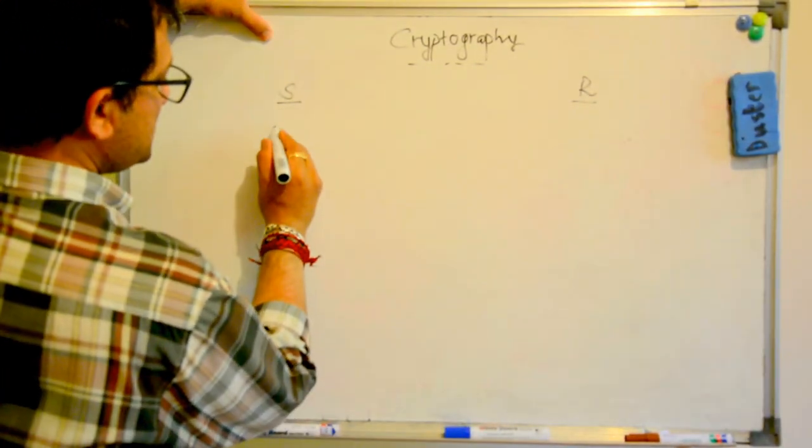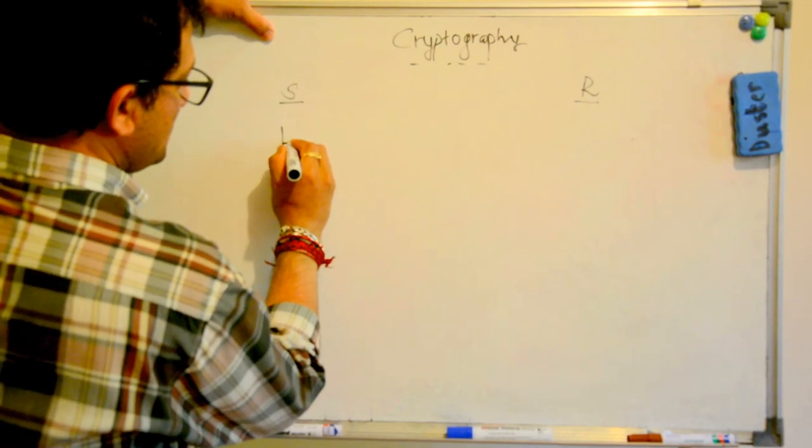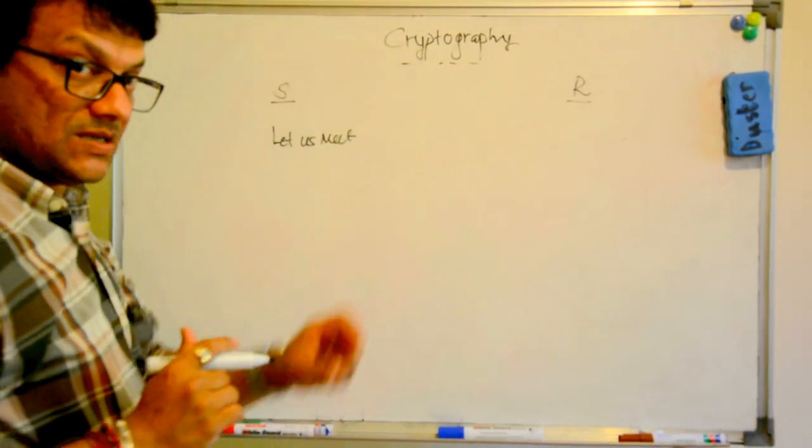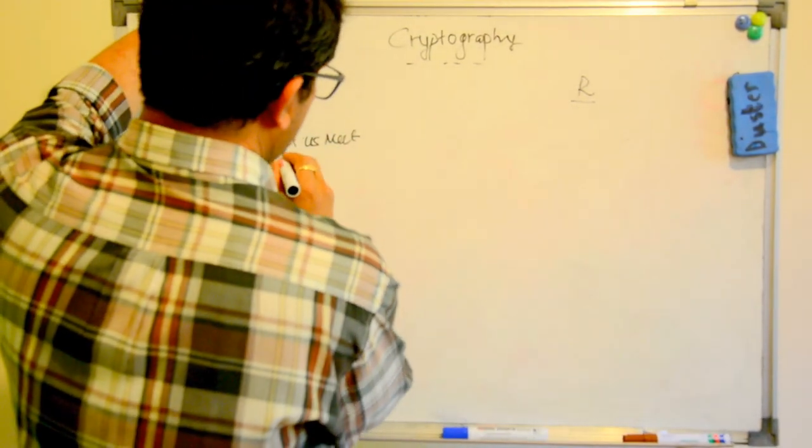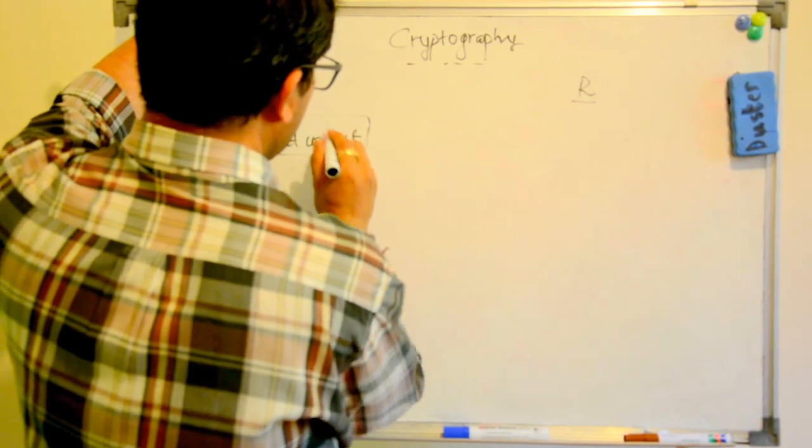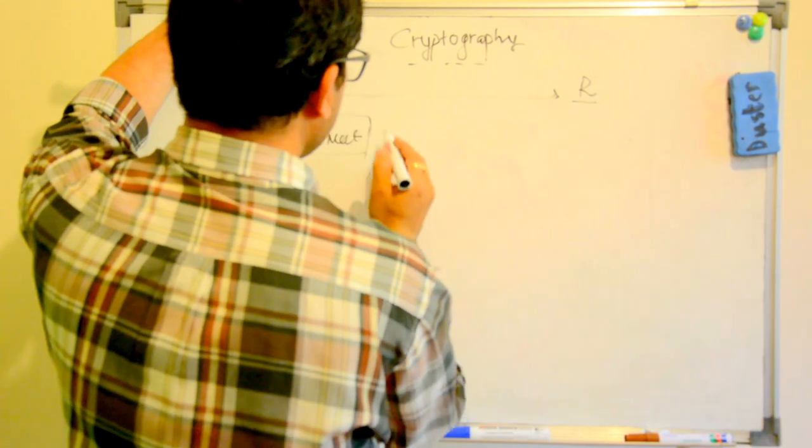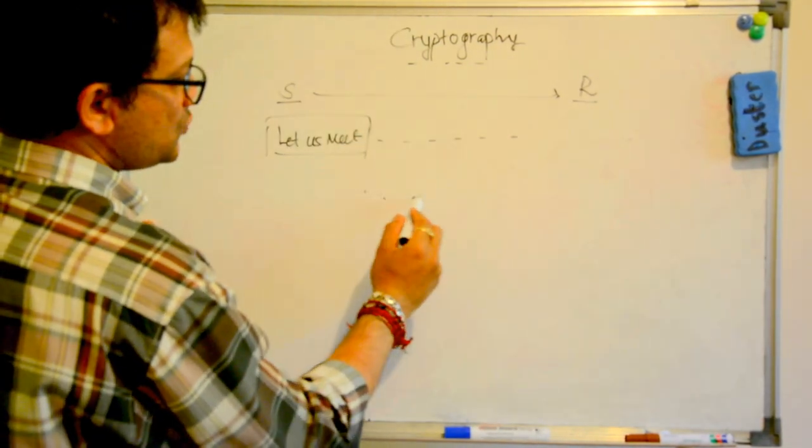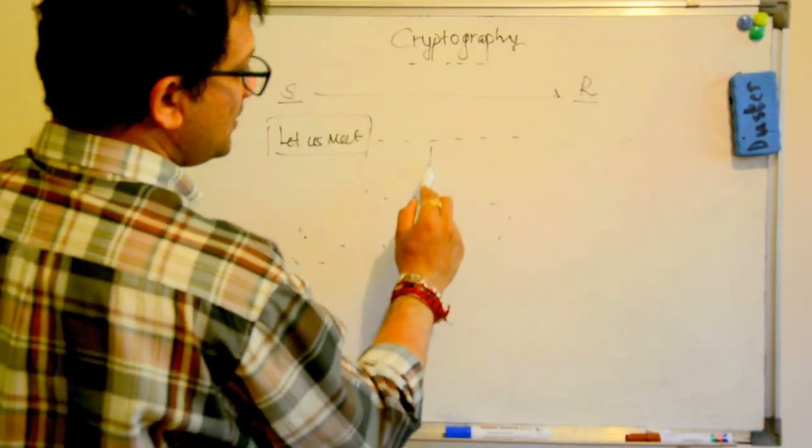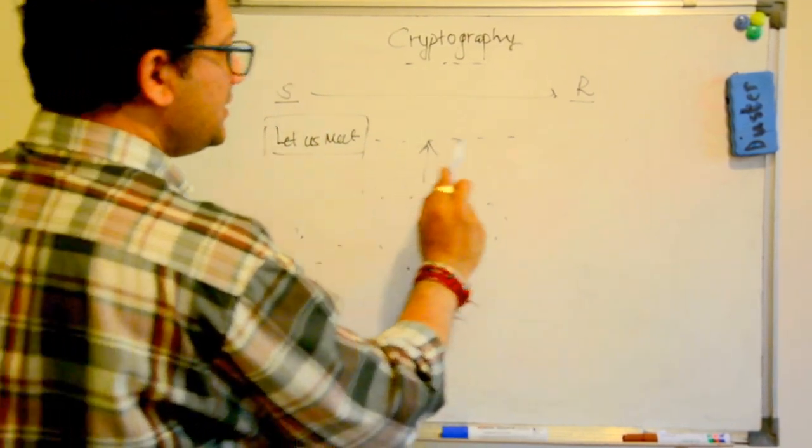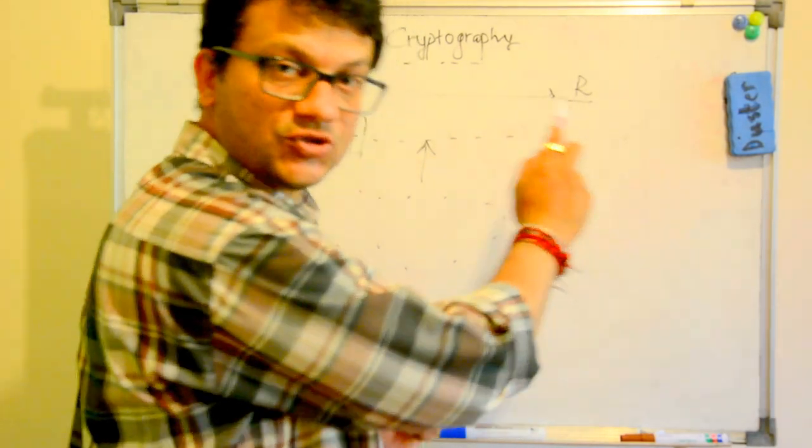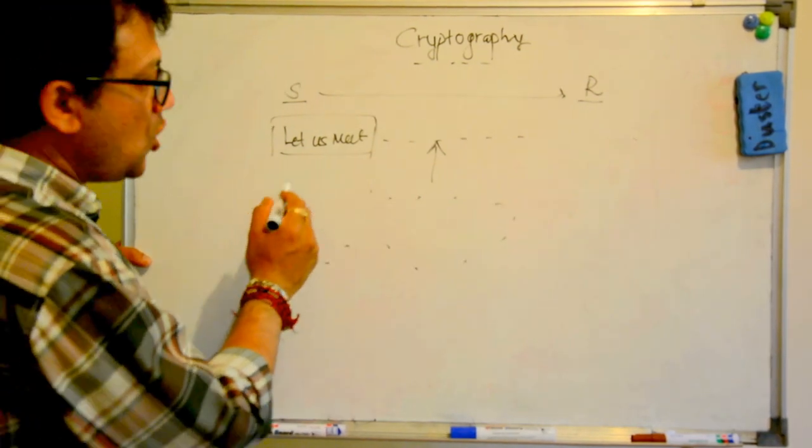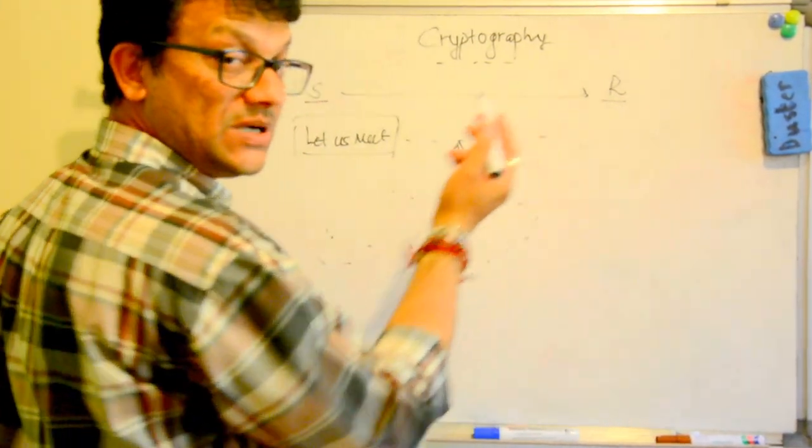Say the message is 'let us meet'. Now this message is sent by sender to receiver. In the whole world there might be so many people who can read this message while it is being sent from sender to receiver. And there is a possibility that they might alter this message before it is received by the receiver.